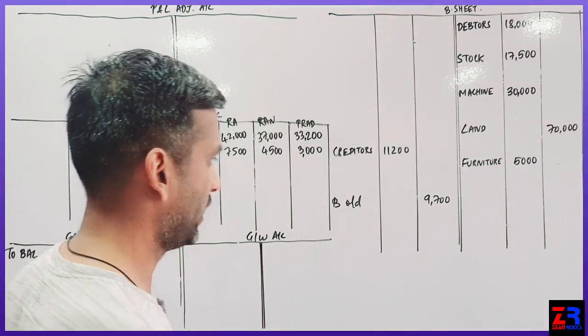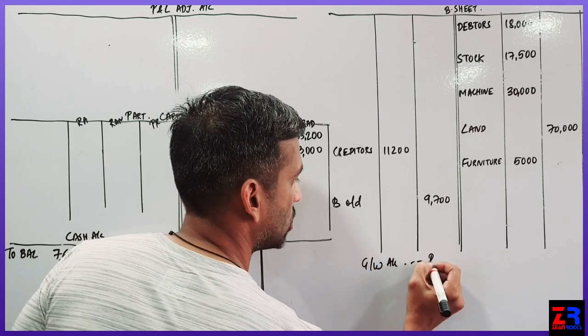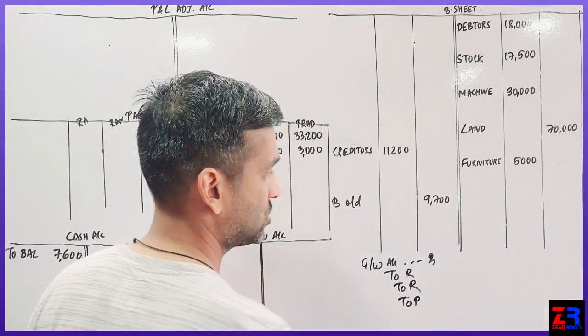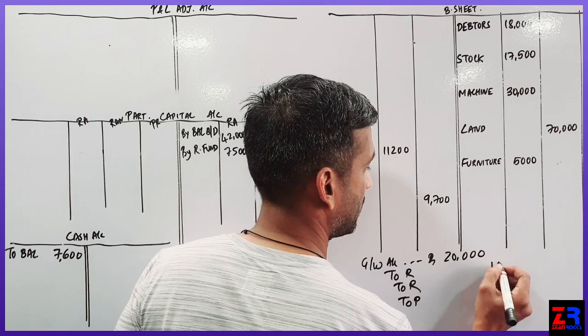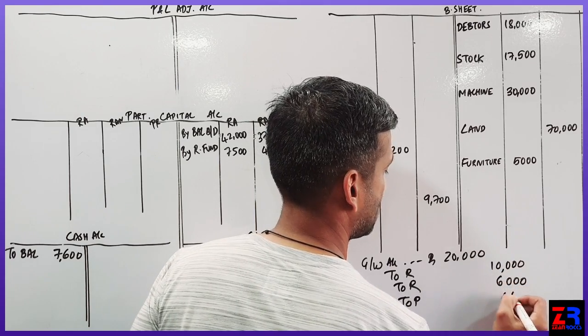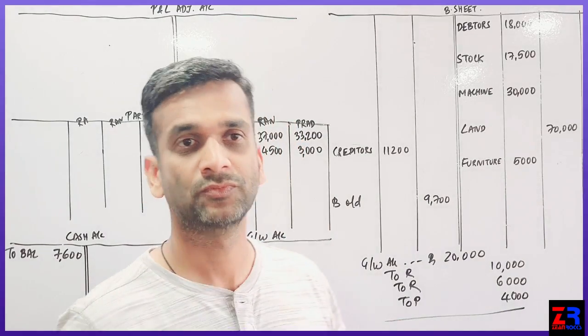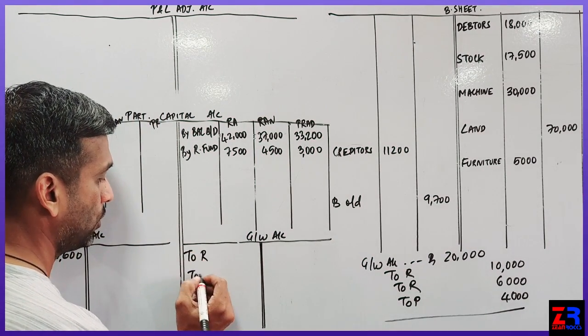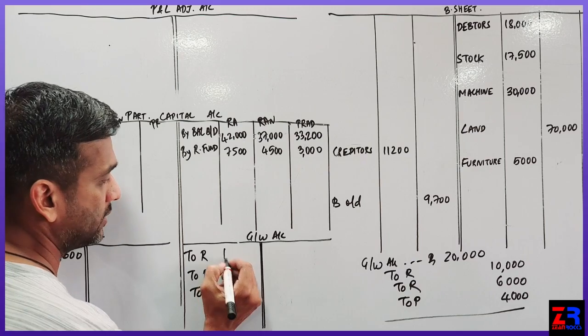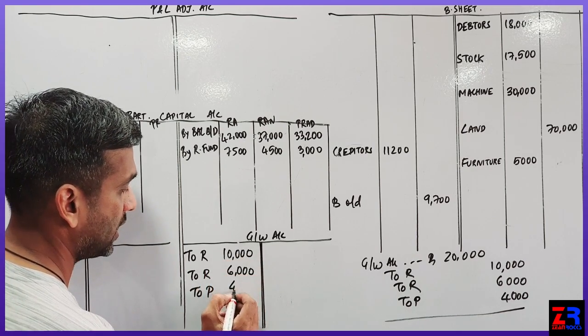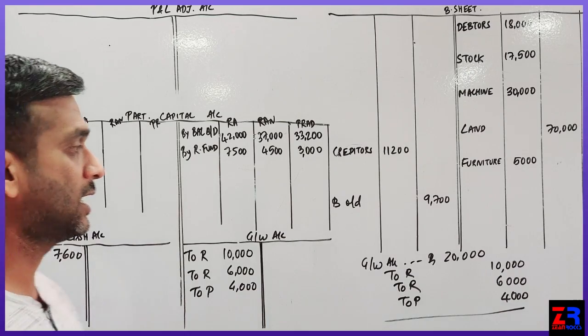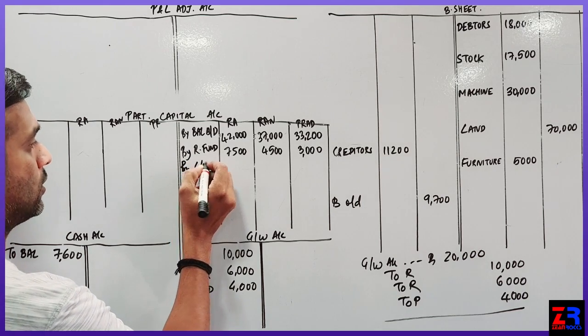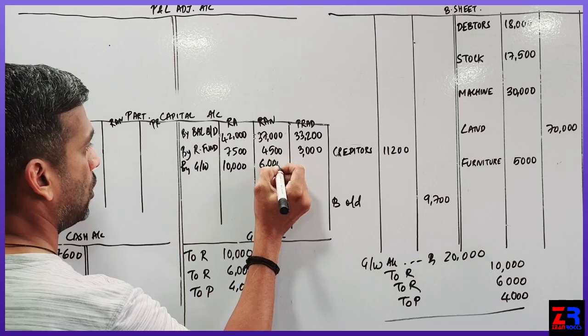So goodwill entry will be goodwill account, debit to Raja, Rani and Pradhani. What is the amount of goodwill? That is 20000, 10000, 6000, 4000, 5 to 3 is to 2. Goodwill account debit to Raja, Rani, Pradhani, 10000, 6000, 4000. Credit by goodwill, 10000, 6000, 4000.